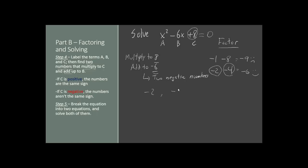We'll write those numbers down. In order to factor the expression, we break it up into two parentheses. Both parentheses will contain an x. The first parenthesis gets the negative 2, giving us x minus 2. The other gets the negative 4, giving us x minus 4. And remember it equals 0, because the expression equals 0.